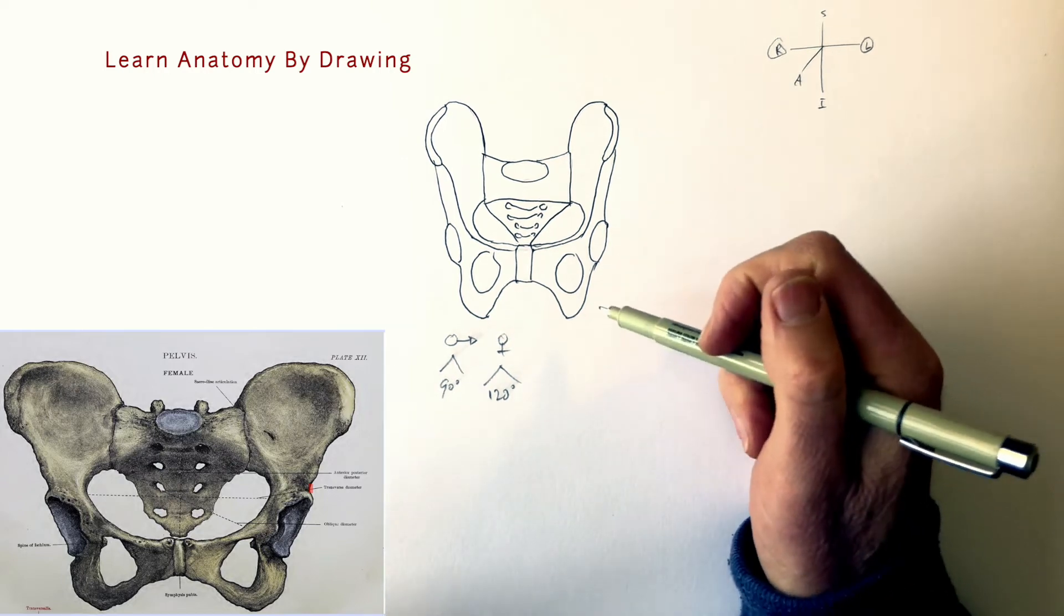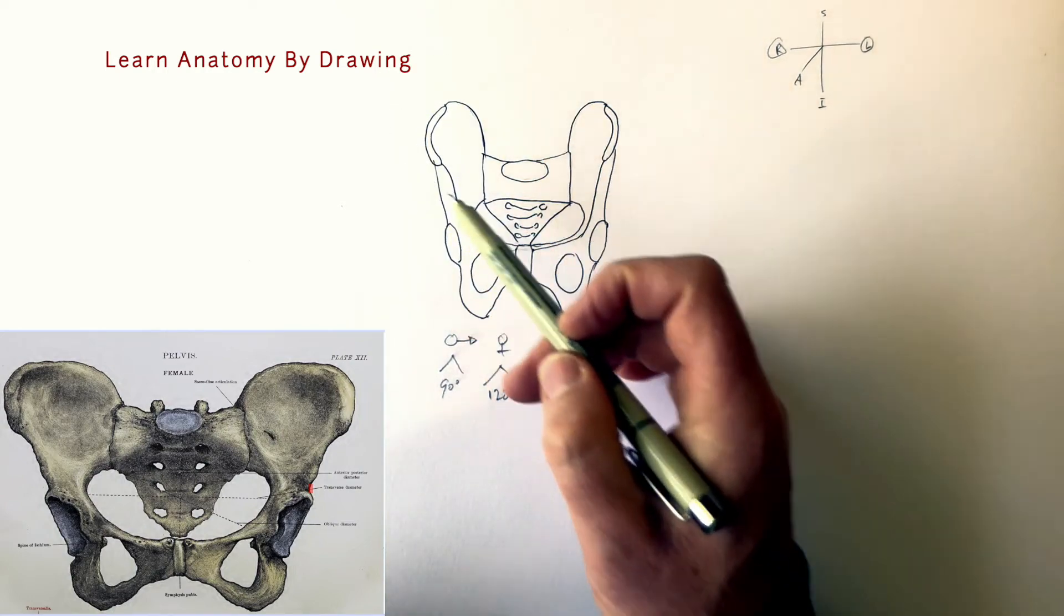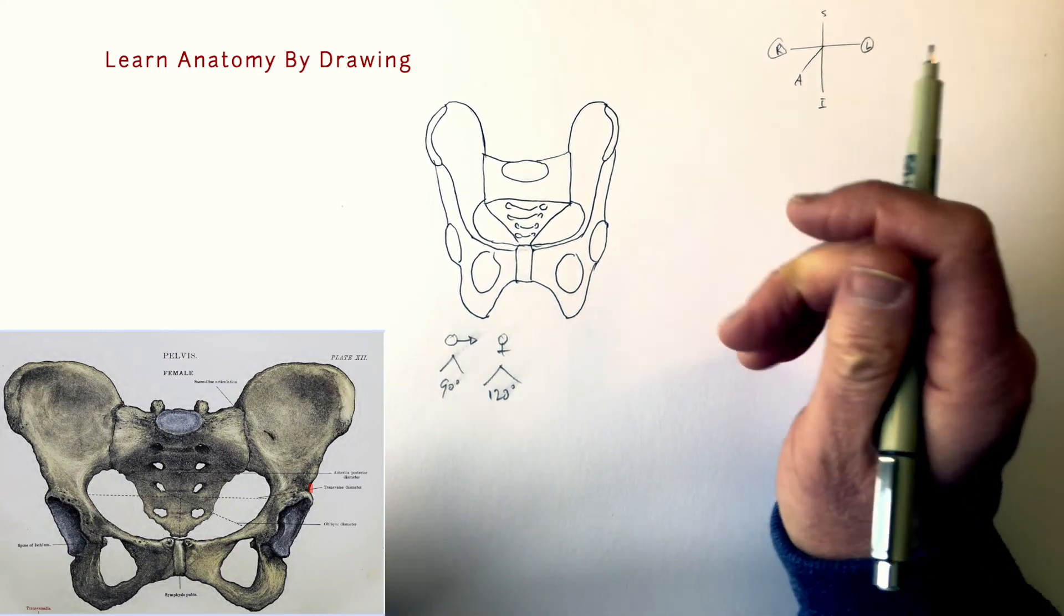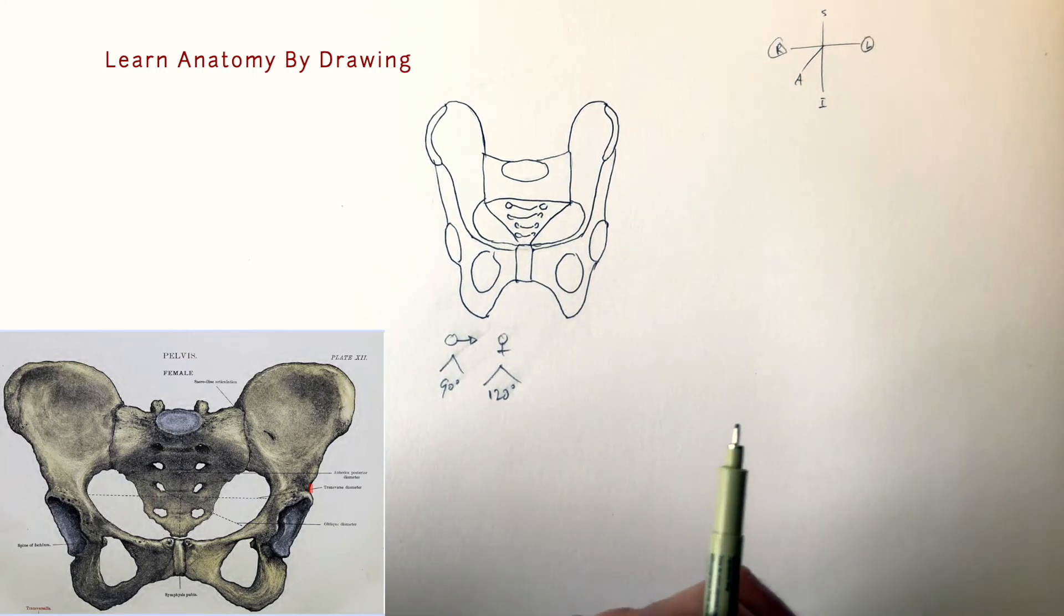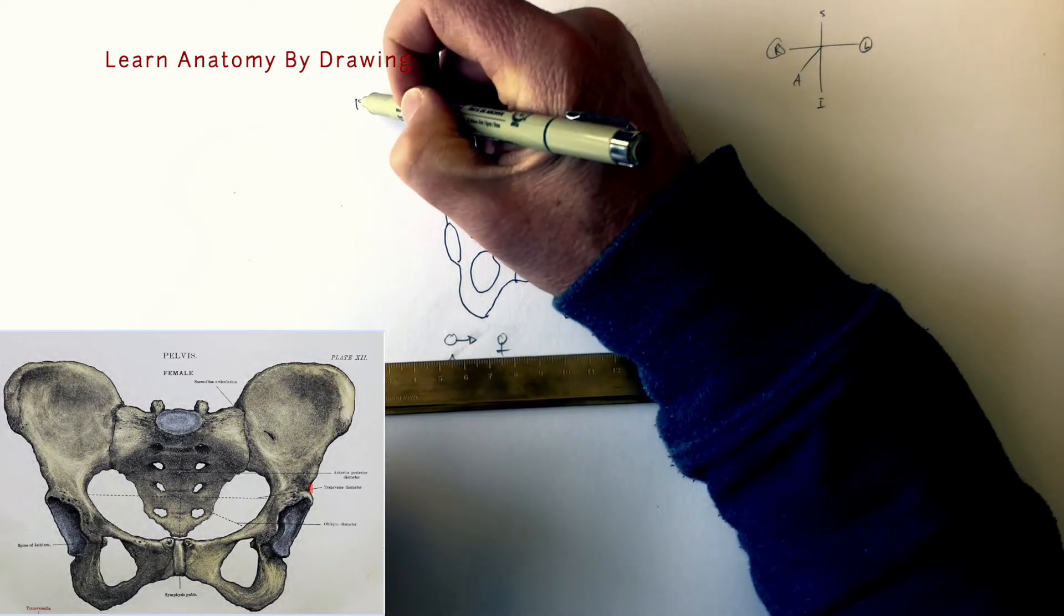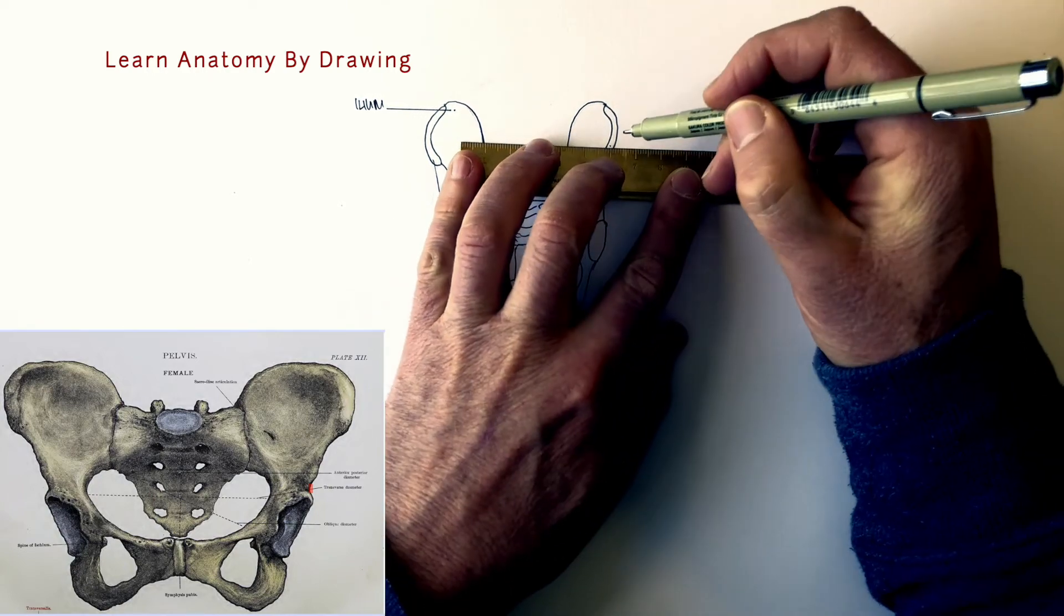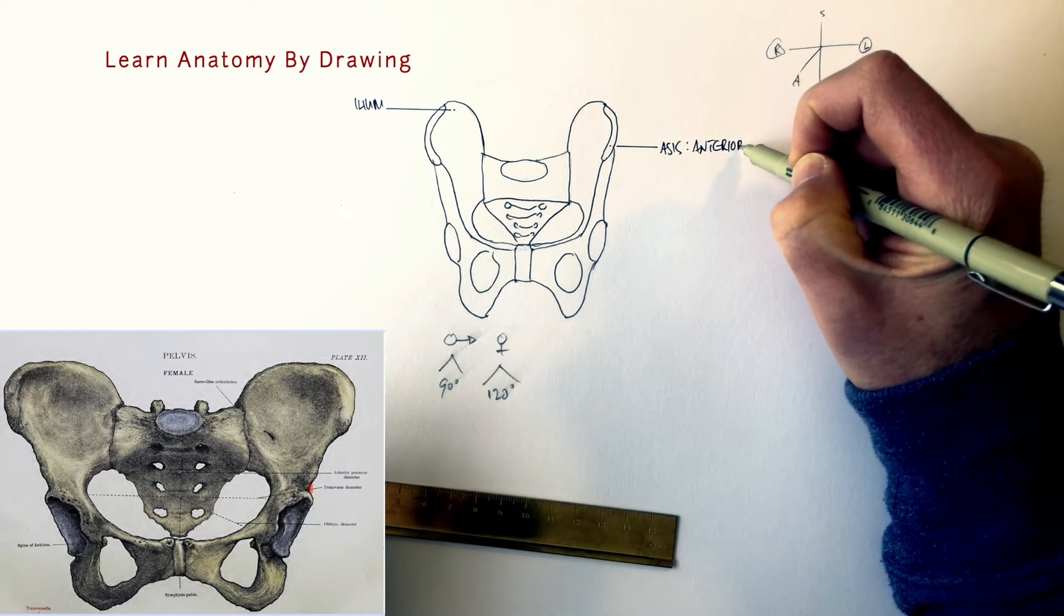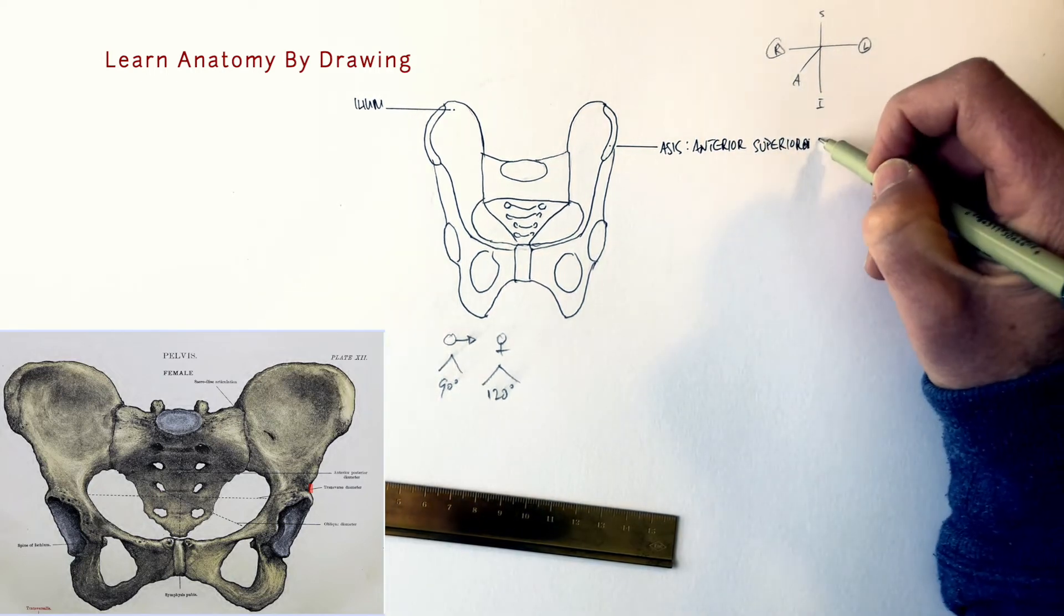Now we're going to label this. You don't have to rub out the lines if you don't want to, sometimes it's nice to leave them in because they give you that sense of three dimensionality. I've done it for clarity sake. I leave the labeling to the end because I don't want to overload you. This big bone here is the ileum, and somewhere along here is an important structure, a landmark called the ASIS, which is the anterior superior iliac spine.